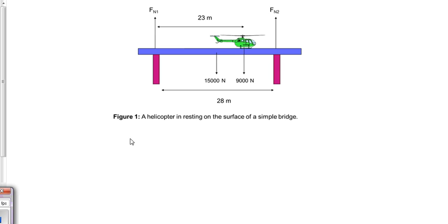In this question, we have a simple bridge, and the helicopter is resting on the bridge, and the bridge has a mass of 15,000 newtons. That will be coming from the center of the bridge. And we have a 9,000 newton helicopter, 23 meters from the left side.